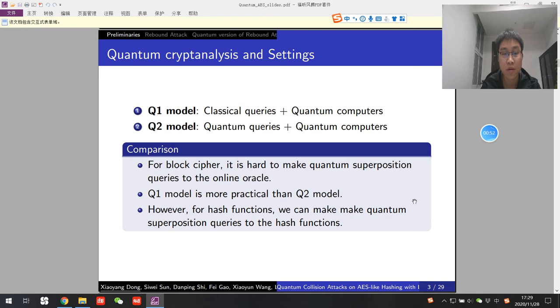In Q2 model, one collects quantum superposition queries. For block cipher, it is hard to make superposition queries on the online oracle. Therefore, Q1 model is more practical. However, for hash functions, there is no key in the oracle. Hence, we can implement it in quantum circuit and make superposition queries with ease.